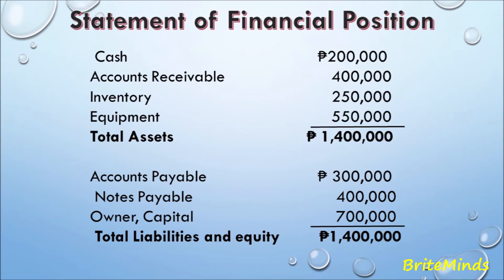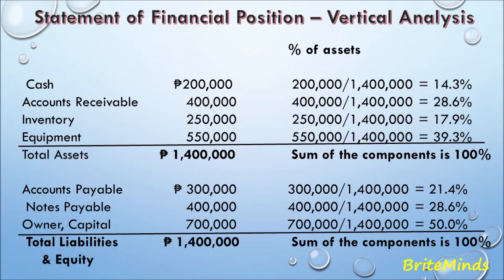The base amount will be the total assets since it is a statement of financial position, and we will go through it line by line. The first line item is cash: 200,000 pesos divided by total assets of 1,400,000 pesos gives a percentage of assets of 14.3%.